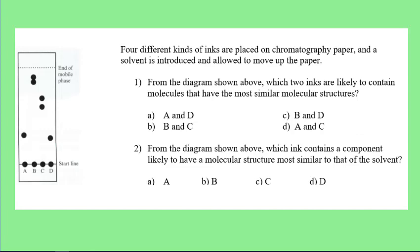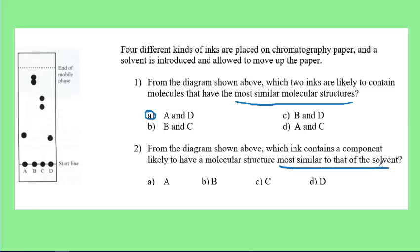Looking at some practice questions — since all the dots are on the same starting line, we don't need to calculate the RF factor to compare within this strip, but we would need it to compare across different strips. If substances have similar molecular structures, they should have traveled roughly the same distance, so A and D traveled roughly the same. For question two, which ink contains a component most similar to the solvent? B traveled the most with the solvent, so it must be most similar. If the solvent was polar, then B would be polar; if nonpolar, B would be nonpolar.